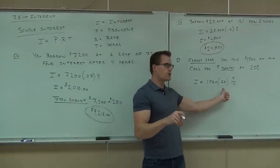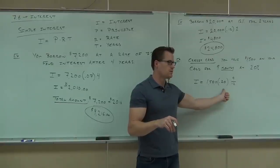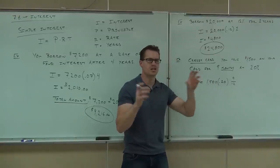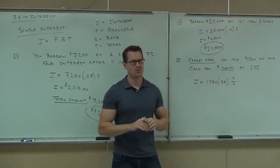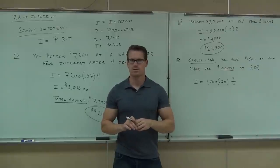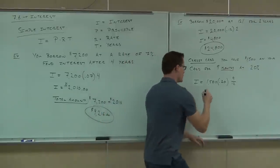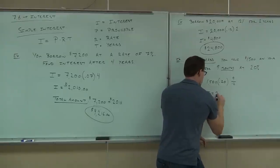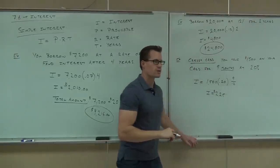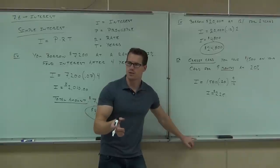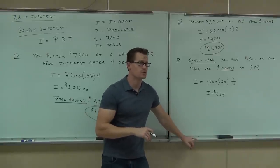Then multiply by .20, and multiply by 1,500. It doesn't matter the order you multiply, as long as you don't round the numbers. The interest comes out to $225. So you can figure out the total amount due at the end of nine months by adding that together — you're going to owe $1,725.